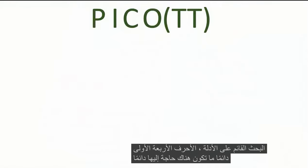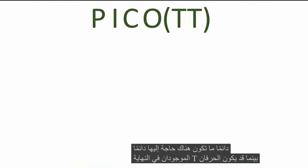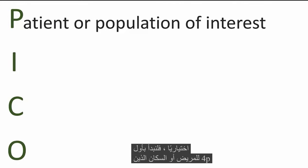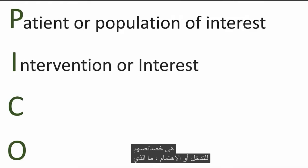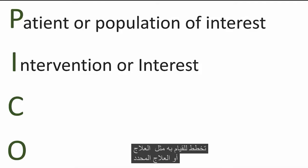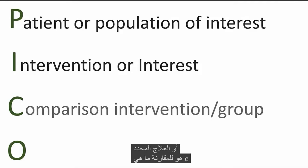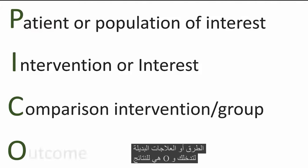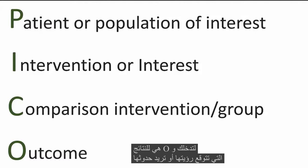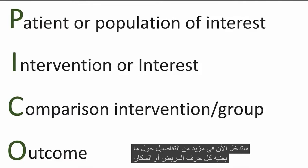The first four letters are generally always needed, while the two T's on the end may be optional. Let's start with the first four. P is for patient or population — who is receiving the treatment and what are their characteristics? I is for intervention or interest — what do you plan to do, such as a specific treatment or therapy? C is for comparison — what are alternative methods or treatments to your intervention? And O is for outcome — what do you expect to see or want to happen? We'll now go into a little more detail on what each letter means.